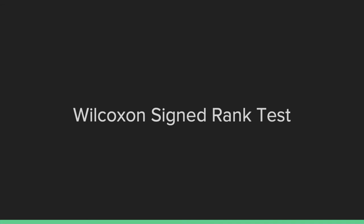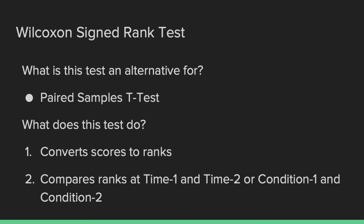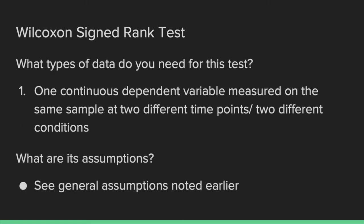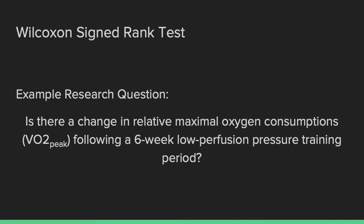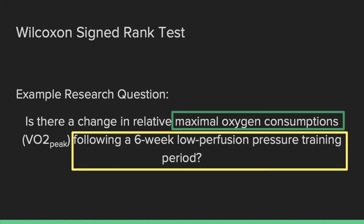We're reaching the halfway mark — on to our third test, the Wilcoxon signed rank test. This test is an alternative for a paired sample t-test. It converts scores into ranks and compares ranks from time one to time two or condition one to condition two, meaning you can also use this test in a matched subject design. You need a continuous dependent variable measured on the same sample at two different time points or in two different conditions, with no additional assumptions beyond the general ones. Our example research question is: is there a change in relative maximal oxygen consumption following a six-week low-perfusion-pressure training period? Our continuous dependent variable — VO2 peak — is measured before and after the six-week training program.